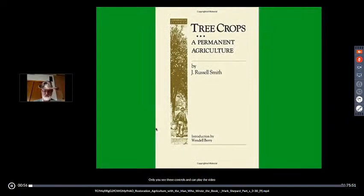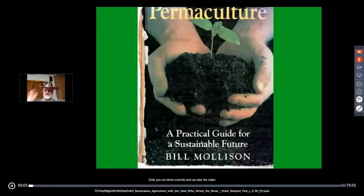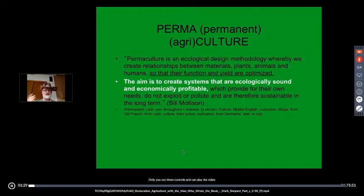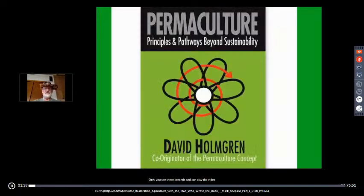Everything is viewed from the perspective of how do we create a permanent agriculture — permaculture. My original inspiration is from Tree Crops by J. Russell Smith. My life was massively changed when I read Bill Mollison and heard him say in the Global Gardener video that the aim is to create systems that are ecologically sound and economically profitable. If it's ecologically sound, everything is recyclable, part of nature. If it's economically profitable, we can feed ourselves, pay bills, and have surplus to share.